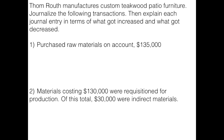The first transaction is we purchased raw materials on account. Now this actually shouldn't be anything new to us from our financial accounting class. We know when we purchase materials on account what should get credited and what should get debited.